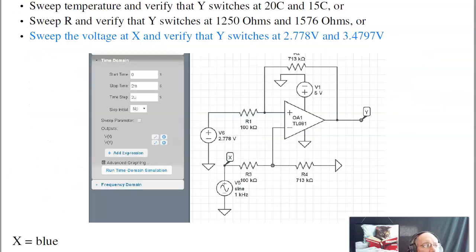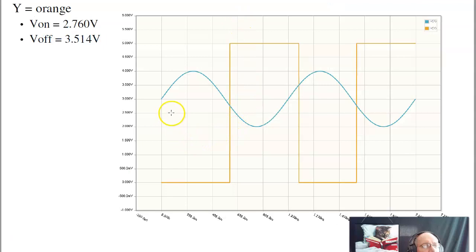In CircuitLab, I can verify that design, build the circuit, and I can either sweep temperature and put in a temperature sensor, or I can sweep the resistance and see that it switches at 1250 ohms and 1576 ohms. Or I can sweep voltage and see that it switches at 2.77 volts and 3.47 volts. Here I'm going to use the voltage source and check the voltages. For the sine wave, I have a sine wave that's centered at 3 volts. That's your DC offset. It goes plus minus 1. When it goes below this point, 2.76 volts, the output turns on. When it goes above this point, 3.5 volts, it turns off. And the difference in the two is your deadband. That's the hysteresis region. That's where you prevent chatter.